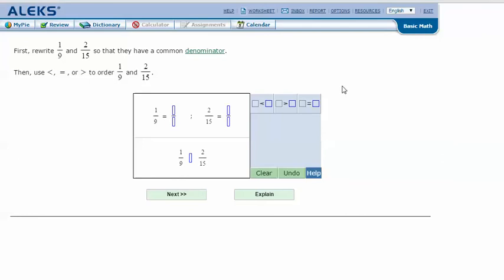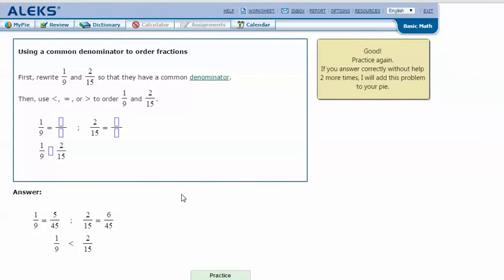In my ALEKS screen, copy over what I got in my notes. So 1/9 is 5/45, 2/15 is 6/45. So now we can see that 1/9 is less than 2/15. And click next. And it says that I got the correct answer. Thanks for watching.